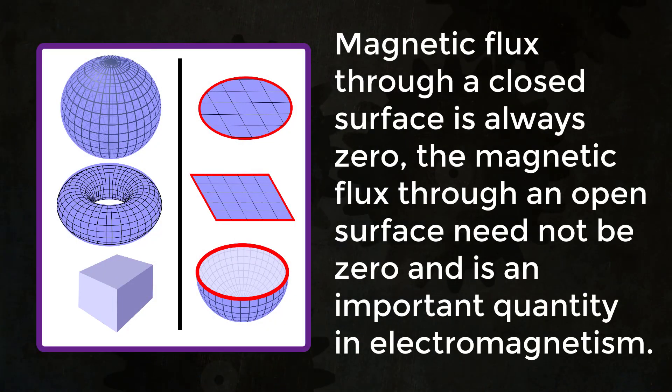Magnetic flux through a closed surface is always zero. The magnetic flux through an open surface need not be zero and is an important quantity in electromagnetism.